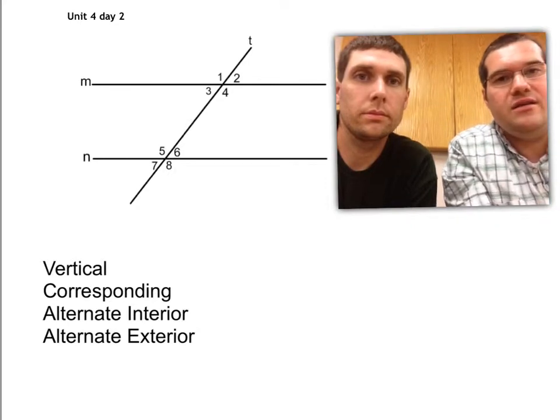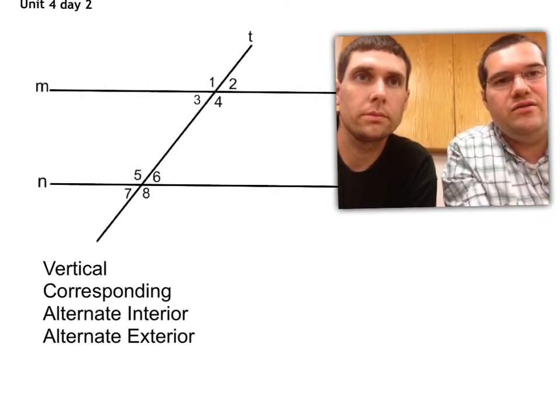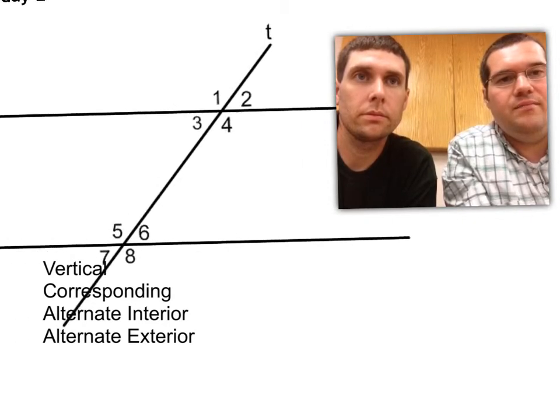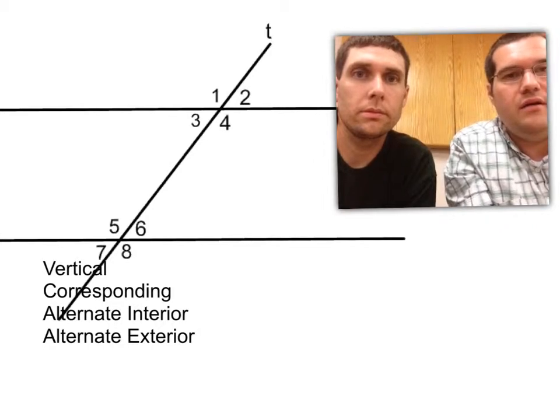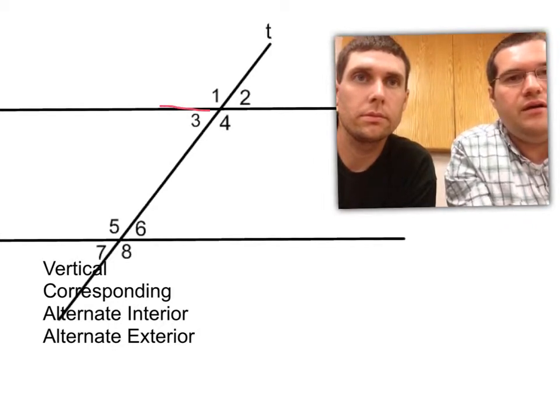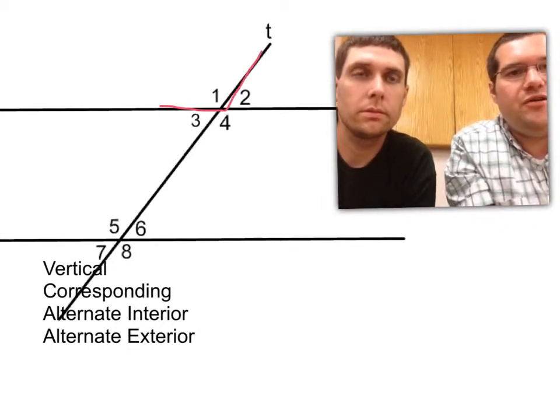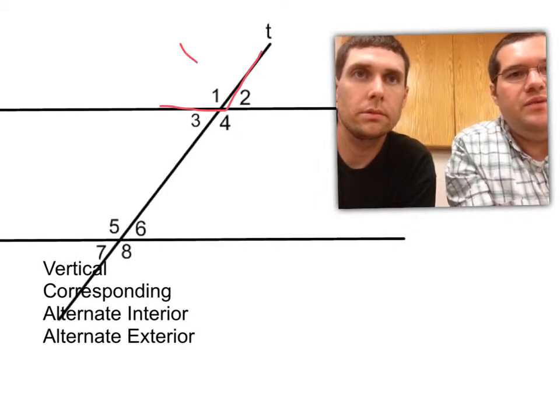So for vertical angles, let me just zoom in to the parallel lines cut by a transversal here, and let's take a look at just angle 1. So angle 1 right here, its vertical angle would be angle 4.